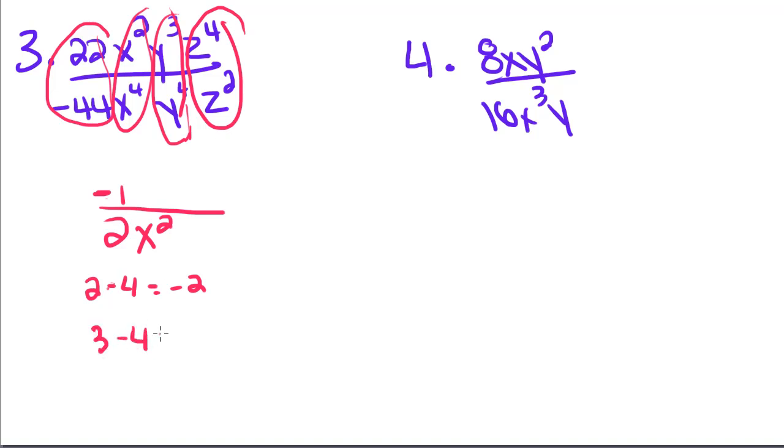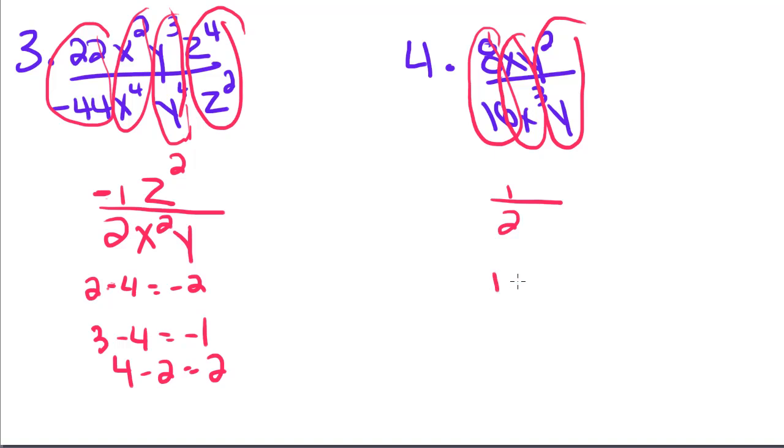3 minus 4 is going to give us negative 1, so that y is going to stay on the bottom as well. And 4 minus 2 is going to be positive 2, so that z squared is going to stay on top. So we have one last problem. 8 divided by 16 is 1 half, x to the 1st minus x to the 3rd gives us x squared on the bottom. 2 minus 1 gives us 1 on top, so we have y over 2x squared.